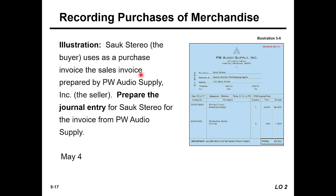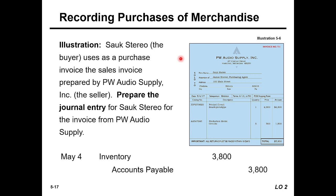The sales invoice is prepared by the seller PW Audio Supply. We need to prepare the journal entry for Sauk Stereo for the invoice from PW Audio Supply. Under the perpetual inventory system, when we record a purchase, we debit Inventory and credit Accounts Payable. That is the character of a credit purchase under the perpetual inventory system, supported by an invoice.